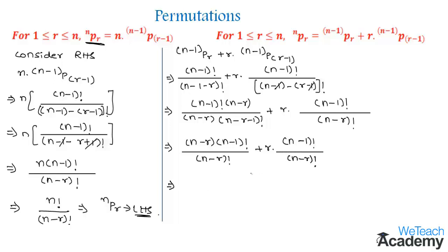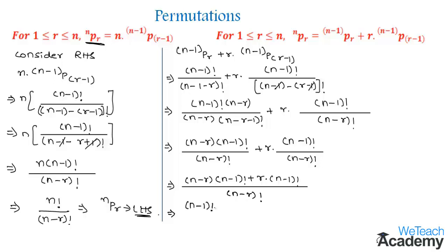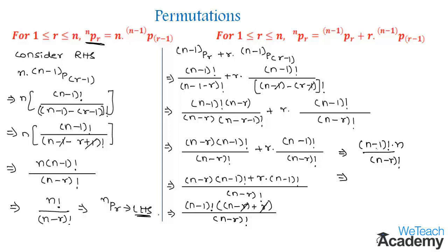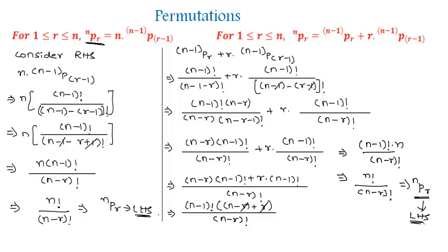Taking the LCM, we get (n-r) into (n-1)! plus r into (n-1)! all divided by (n-r)!. Taking (n-1)! as a common factor from the numerator, we get (n-1)! into (n-r+r) divided by (n-r)!. The terms -r and +r cancel, leaving (n-1)! into n divided by (n-r)!, which equals n! divided by (n-r)!. This is nPr, the required left hand side.